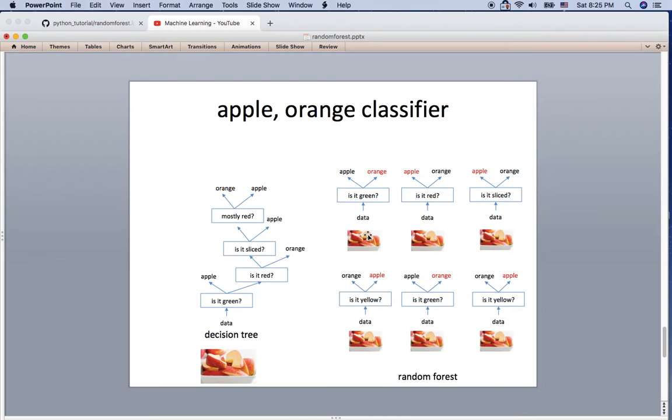Let's see this random forest. So first small tree saying it's orange, second tree saying apple, apple, apple, orange, apple. So four apples, two oranges. By the hard voting here, the random forest is predicting this one is apple, which is correct.